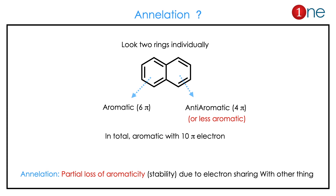If you look at naphthalene, it has two rings and 10 pi electrons. But if you look at each ring individually, one ring is technically aromatic and the other ring is kind of anti-aromatic — or more correctly, less aromatic. But in total it is an aromatic system with 10 pi electrons. So partial loss of aromaticity due to the sharing of electrons is called the annulation effect.